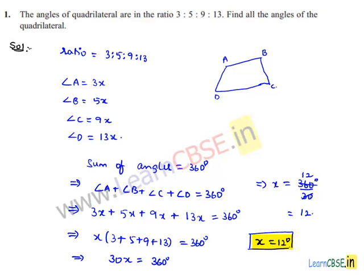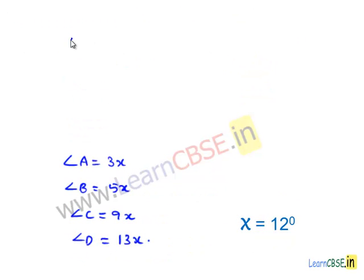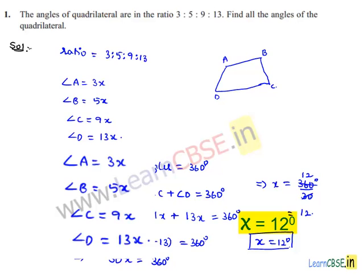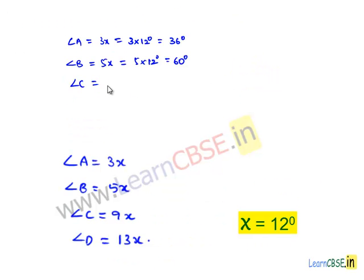Now that we have x = 12 degrees, let us substitute into angles A, B, C, and D. Angle A = 3x = 3 × 12 = 36 degrees. Angle B = 5x = 5 × 12 = 60 degrees. Angle C = 9x = 9 × 12 = 108 degrees.